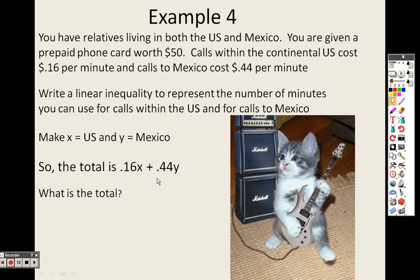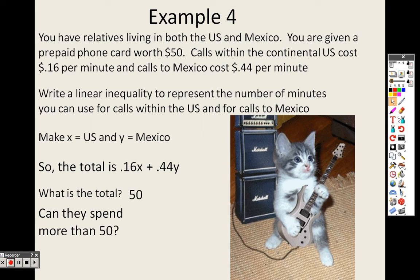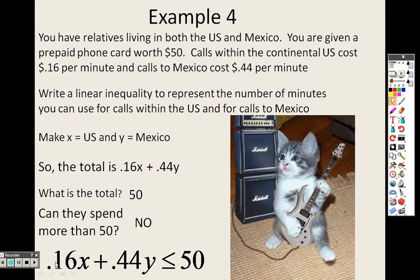So to find the total, I know that it costs a prepaid phone card worth $50. So I know the total is $50. Can they spend more than $50? Well, if it's a prepaid phone card, no. So the max they can spend is $50, but they could spend less than that and have some left over. So this is the actual equation we come up with: 0.16X plus 0.44Y is less than or equal to $50.